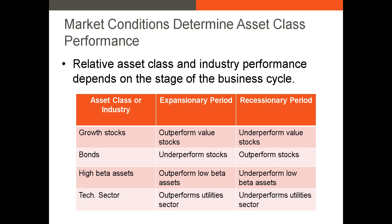Historically, bonds underperform stocks during most time periods. However, during recessionary periods, bonds tend to outperform stocks since there tends to be a sell-off in the equity market. Historically, stocks with high betas outperform stocks with low betas during expansionary periods, since high beta stocks have cyclical cash flows that grow when investors have disposable income. Examples of high beta stocks are airlines, travel companies, auto manufacturers, and real estate developers. During recessionary periods, few people are traveling or buying durable goods, so these high beta stocks underperform. The tech sector also tends to outperform during expansionary periods, as many valuations are based on expectations of future growth; as those expectations fall during recessions, tech stocks underperform firms with more stable cash flows.